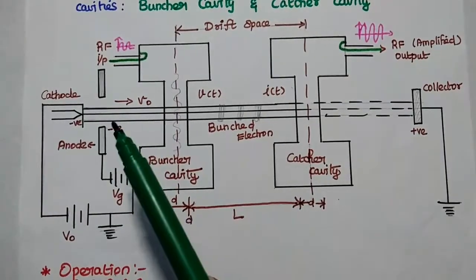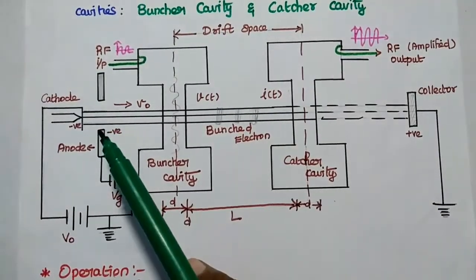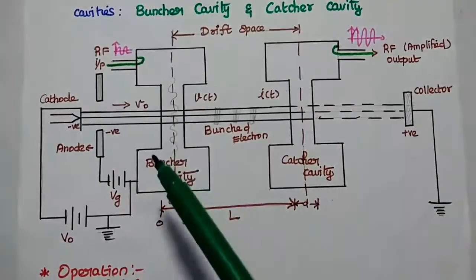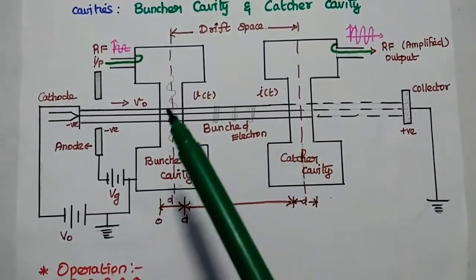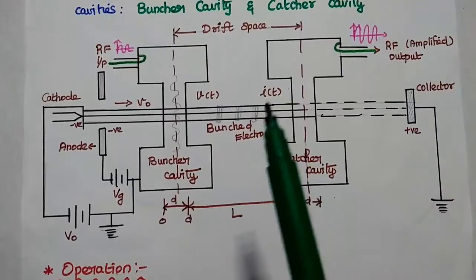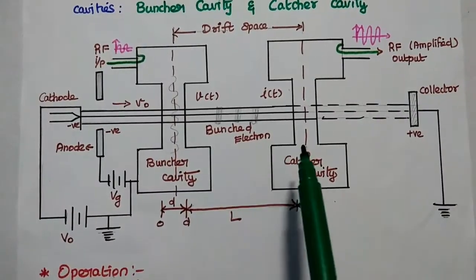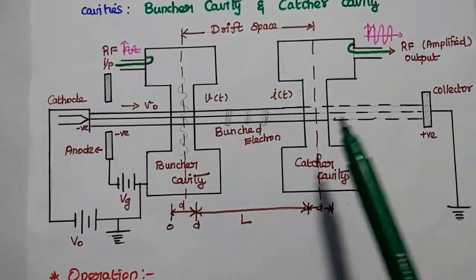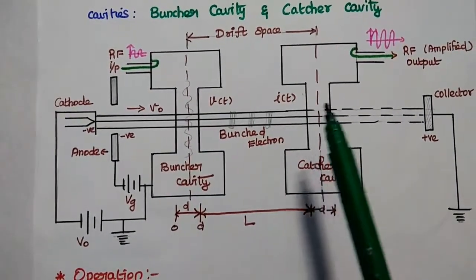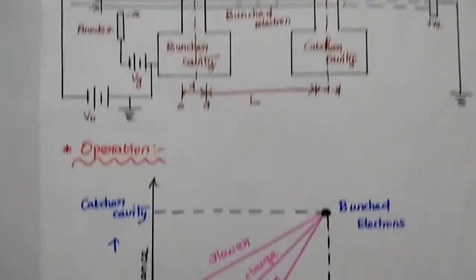To summarize the working principle: the electron gun emits an electron beam; the accelerating anode increases the velocity of the electron beam. Then in the buncher cavity, the RF input sinusoidal signal is applied and the bunching process occurs. The drift space is important because in this space, the bunched electrons move towards the catcher cavity. In the catcher cavity, the amplification process takes place by transferring kinetic energy from the bunched electrons into the RF field.